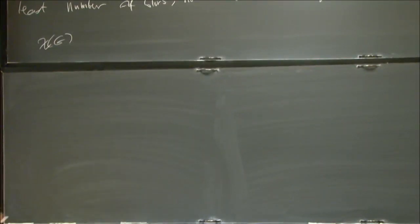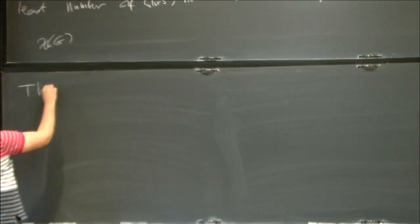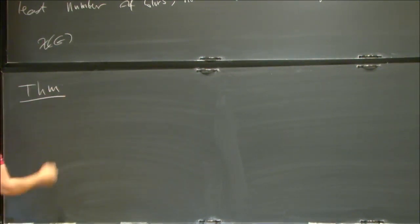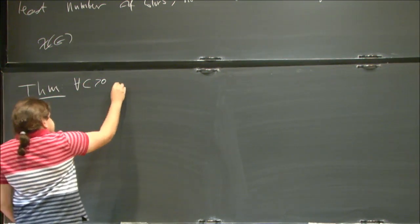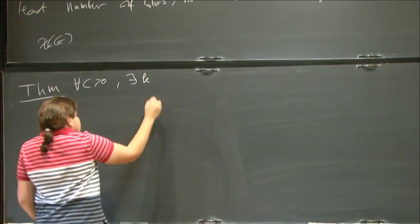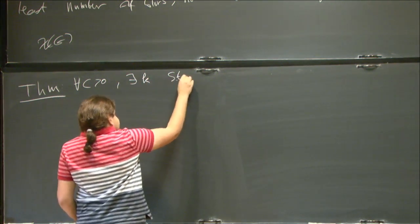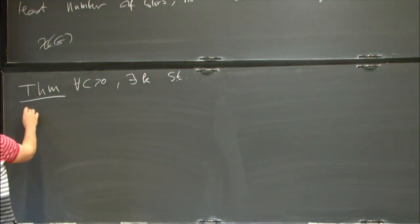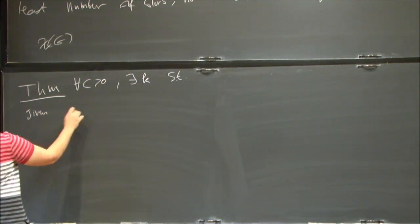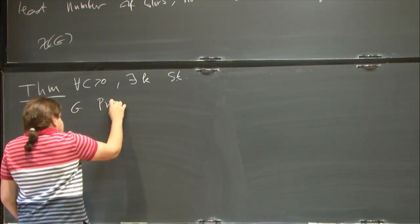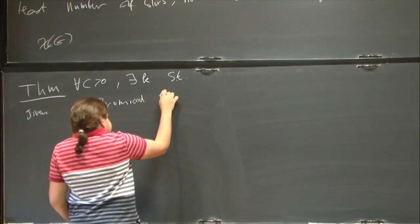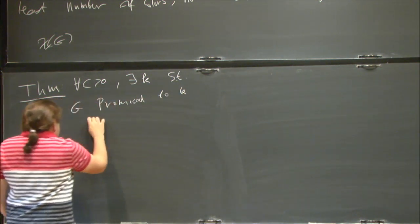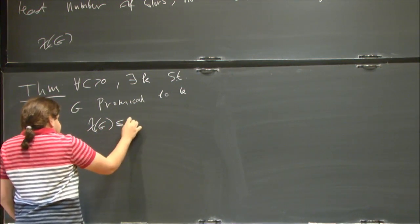And we denote it by chi of G. Okay, so, here is a theorem. For every c greater than zero, there exists some k, such that, if I give you G, promised, to be, of a chromatic number, at most k,